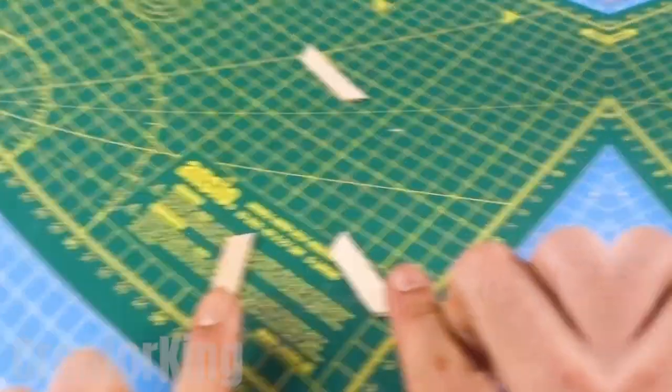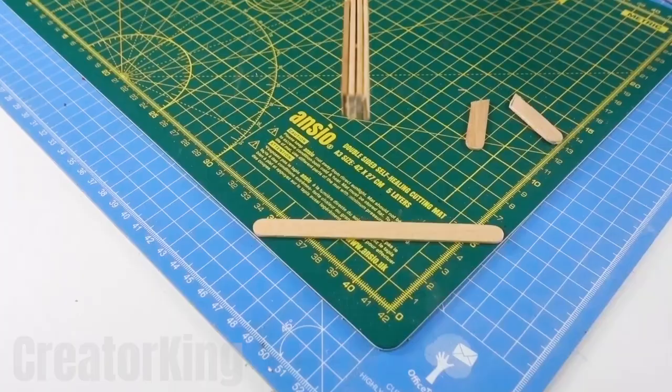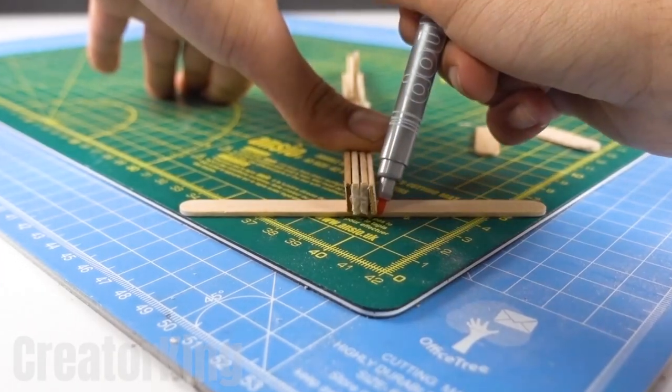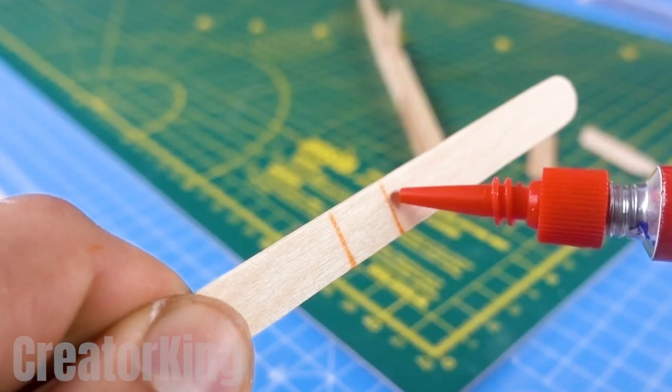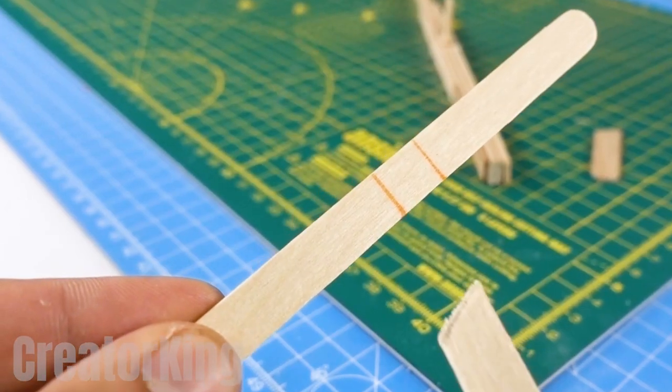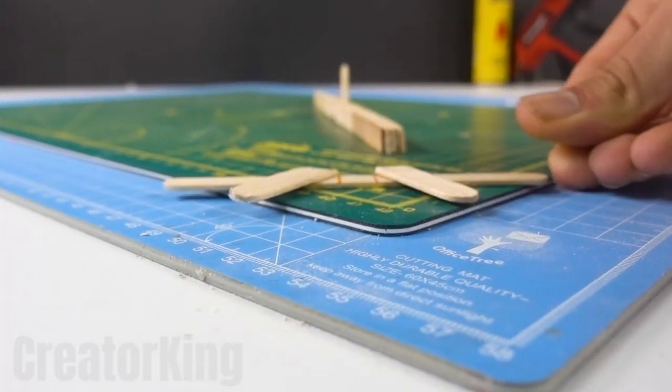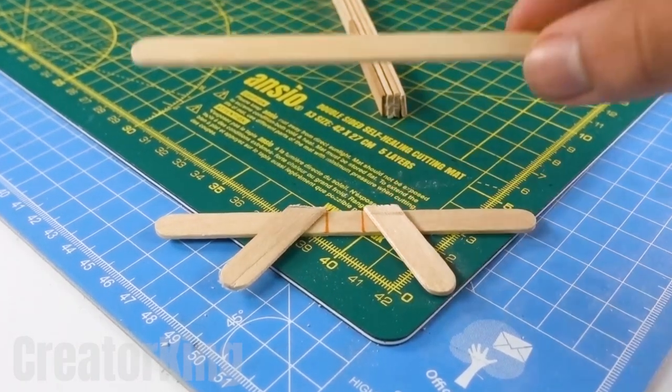We'll draw two diagonals on the other tongue depressor and separate them. We'll use these in a minute. We'll use our structures width to measure these lines which will mark where to glue the pieces from earlier. We'll also attach another stick to the other side.